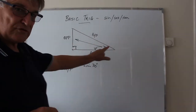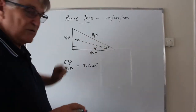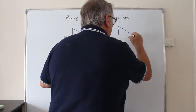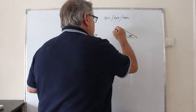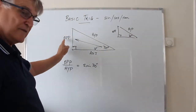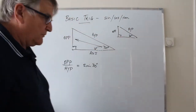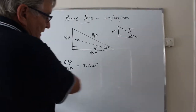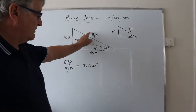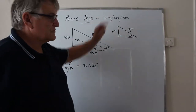Any right triangle of any size with a 30-degree angle will have the same ratio. A small triangle with a 30-degree angle and a right angle will have exactly the same opposite-over-hypotenuse value as a larger triangle with 30 degrees. The fact that these ratios are equal is tied to the fact that these angles are equal. Even a much larger triangle with a 30-degree angle will have the same ratio.